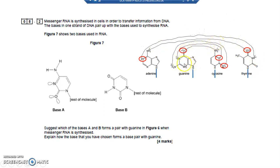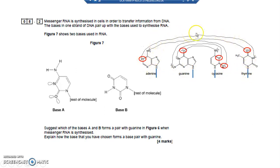You can also see now that three intermolecular hydrogen bonds form between guanine and cytosine, and between thymine and adenine only two bonds form.